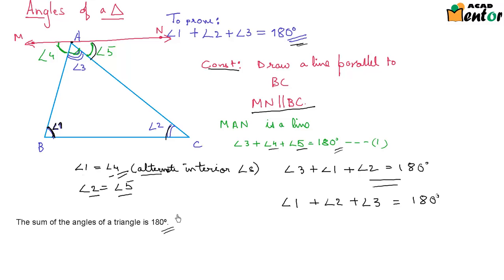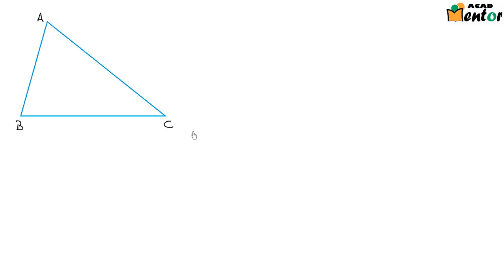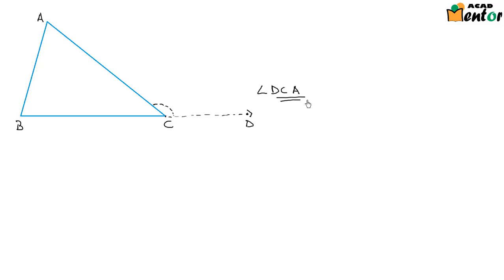Now let's recall how we form an external angle. If we are given triangle ABC and we want to form an external angle at point C, we extend side BC in a straight line to a point D. The angle formed — angle DCA — is your external angle at C.